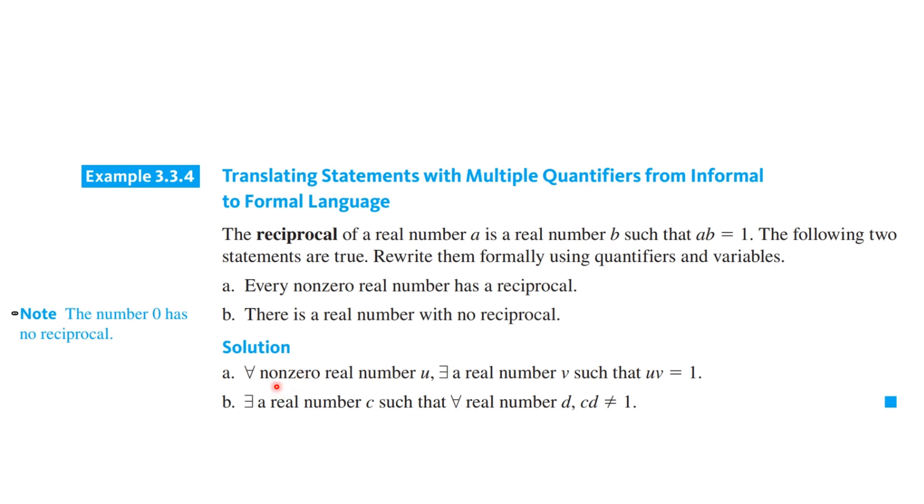Let's see how you did. So, you should say for every non-zero real number U, there exists a real number V such that U times V is equal to one. And B, there exists a real number C such that for every real number D, C times D does not equal one, and that is going to be zero because zero has no reciprocal.